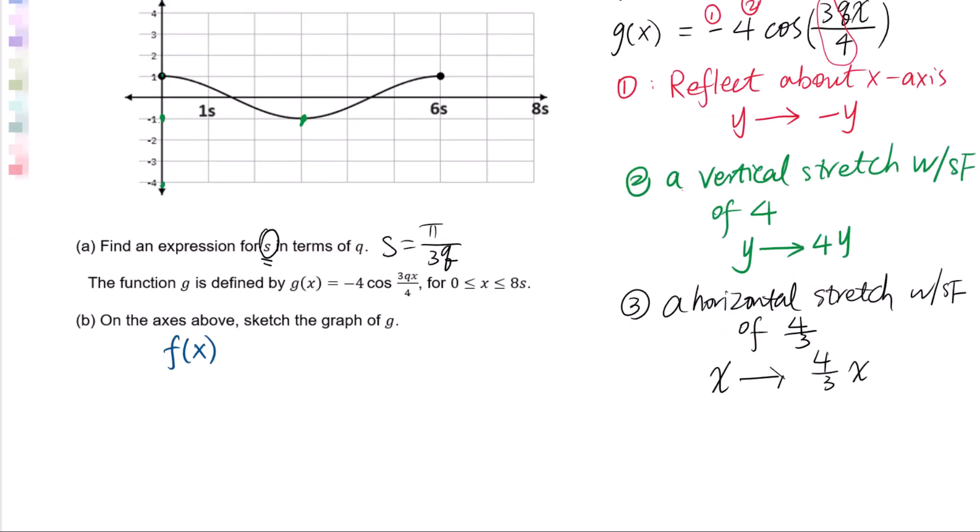Let's draw a conclusion. From f(x) to g(x), the x-coordinate in f(x) will be changed to (4/3)x. The y-coordinate times -1, then times 4 gives -4y.